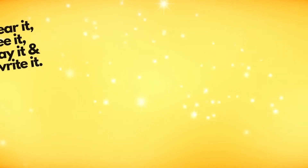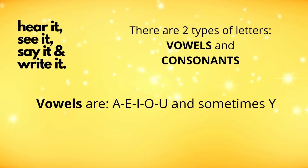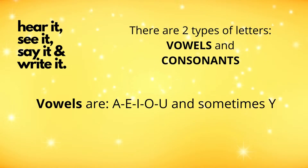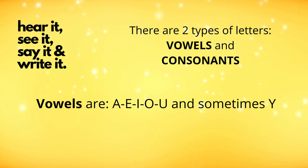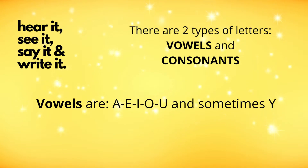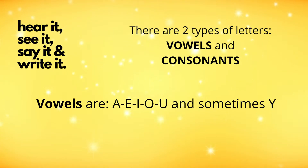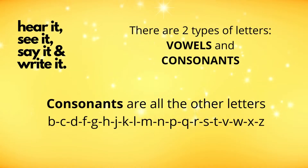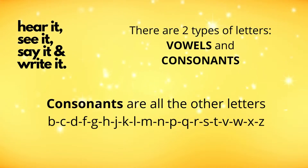There are two types of letters: vowels and consonants. The vowels are A, E, I, O, U, and sometimes Y. The consonants are all the other letters.